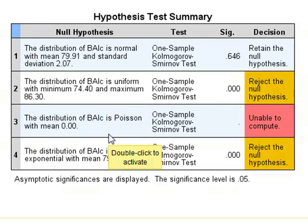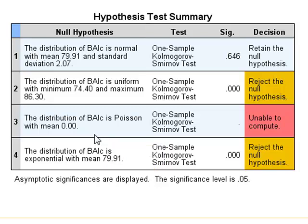For the test against a Poisson distribution, it is unable to compute. This is because the Poisson distribution would expect to see just integer values and we have non-integer values, so it is unable to perform the analysis.